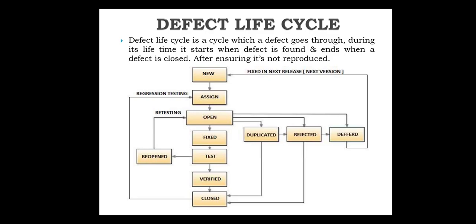The defect life cycle covers the overall lifecycle of a defect from when it is discovered until it is fixed. Here is the diagram of the defect life cycle. There are many phases: the first is 'new', meaning the defect is reported and is in a new state. Next is 'assign', where the defect is assigned to a particular responsible person.